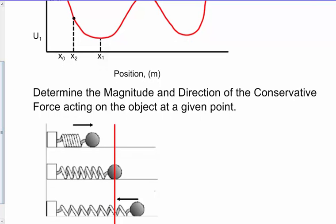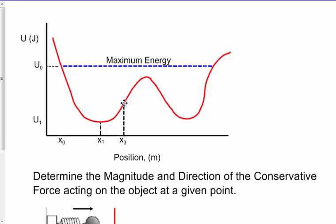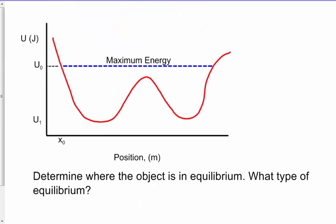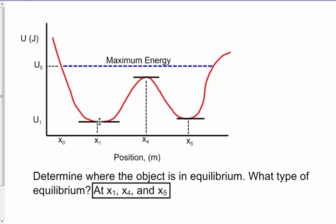As I go back to another position, let's go to the x3 position. This object has been given potential energy working its way back up, and the force is going to push back down toward the equilibrium point. To determine where the object is in equilibrium within a potential energy graph, all you need to do is look for where you have zero slope. At positions x1, x4, and x5, the object will be in equilibrium. You can take the derivative of the potential energy function, set it equal to zero, and determine when the slope is zero to locate equilibrium positions.